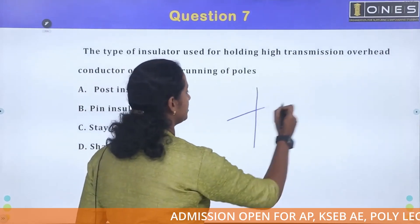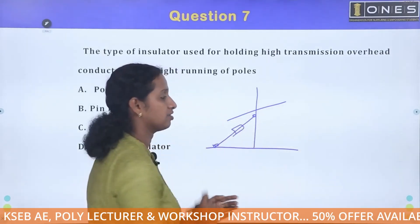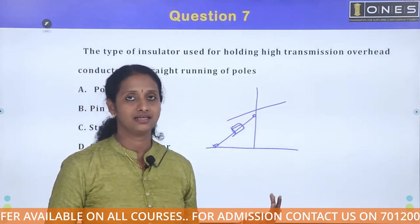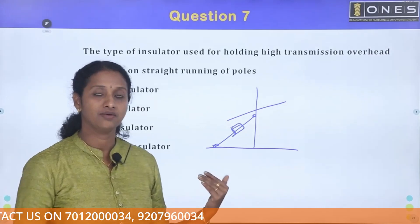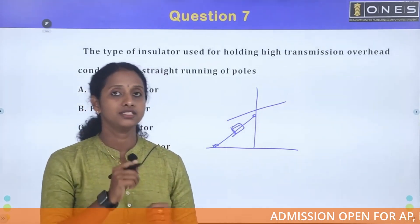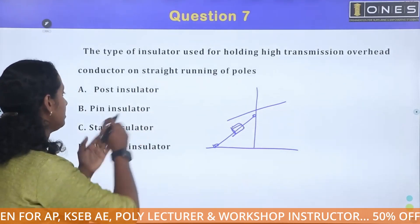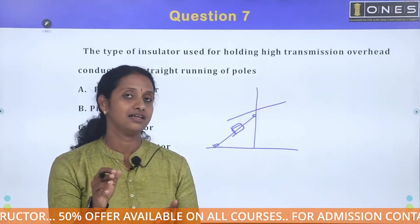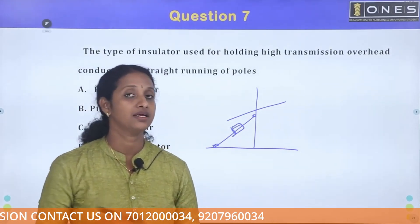You can see the stay insulator and the post insulator. The pin insulator is used in straight runs. The pin insulator is used in the upper and lower voltage ranges. In a straight run, conductors are firmly held by the pin insulator. In about 33 kV applications, we use post insulators.